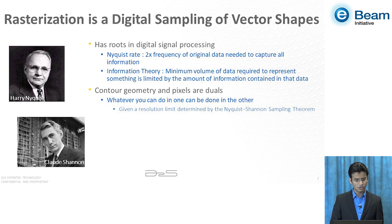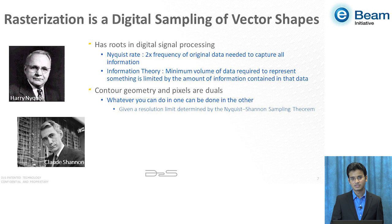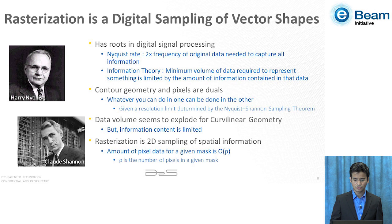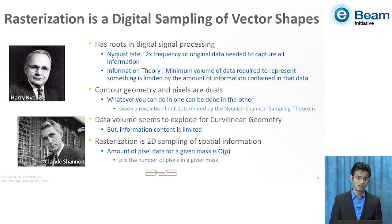Contour geometries and pixels are duals. Whatever you can do in one domain can also be done in the other domain, provided you satisfy the Nyquist-Shannon sampling theorem. Data volume looks like it would explode in the case of curvilinear geometry, but the amount of information is really limited because this data is band-limited. And if this data is going to get rasterized, the information content is also limited. So the information content in any rasterization that follows 2D sampling of vector shapes would actually be dependent on the number of pixels — or in computer science terms, we call it big O of P, meaning complexity is directly proportional to the number of pixels on a given mask.